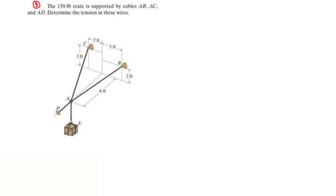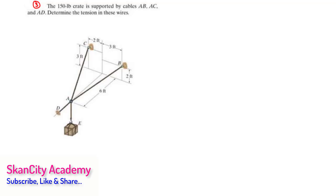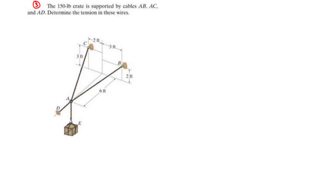Let's move on to question number 3. A 150-pound crate is supported by cables AB, AC, and AD. We need to determine the tension in these wires, and we are going to solve this problem.